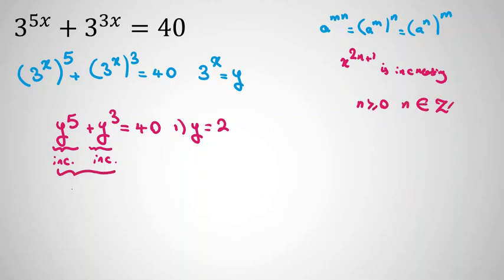So the sum of them is increasing. So the left-hand side is an increasing function, and 40 is a constant term. So they have only one intersection at y equals 2. So our only answer is this.